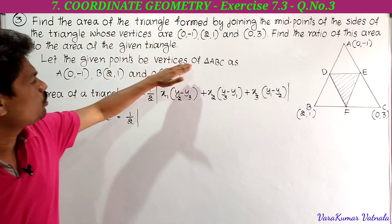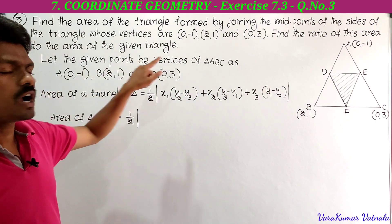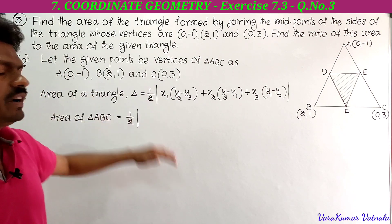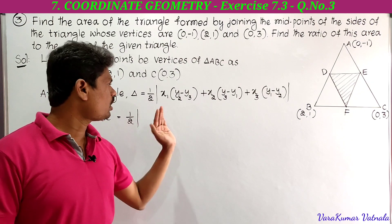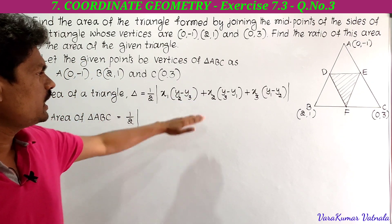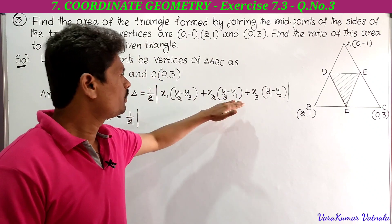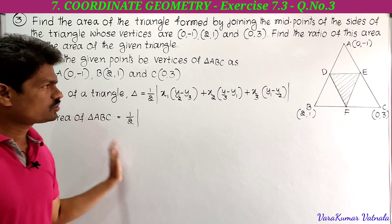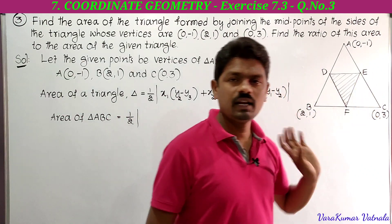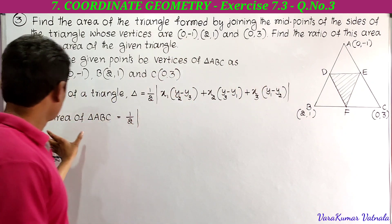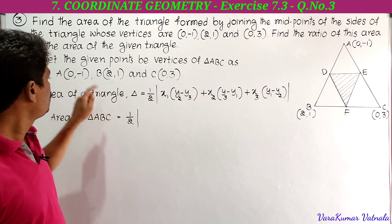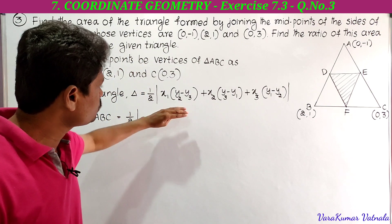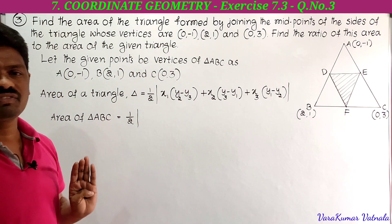Let the given points be vertices of triangle ABC: A is (0, -1), B is (2, 1), and C is (0, 3). The area of a triangle is given by the formula: delta equals half times the modulus of x1(y2 - y3) + x2(y3 - y1) + x3(y1 - y2). We will first find the area of triangle ABC, then the area of triangle DEF.